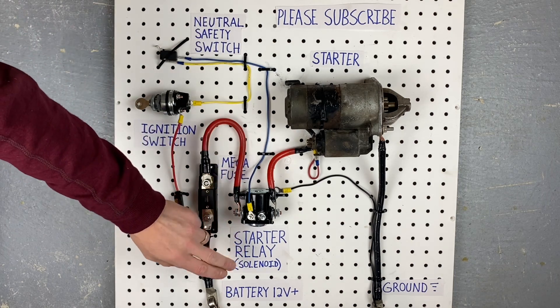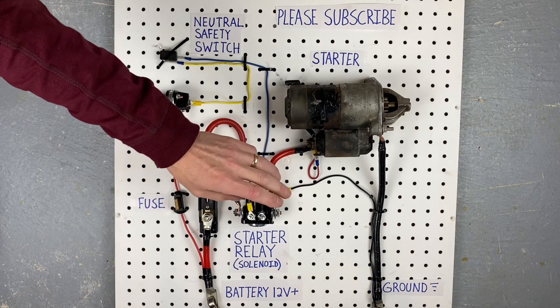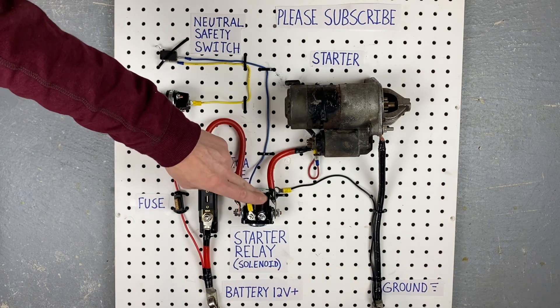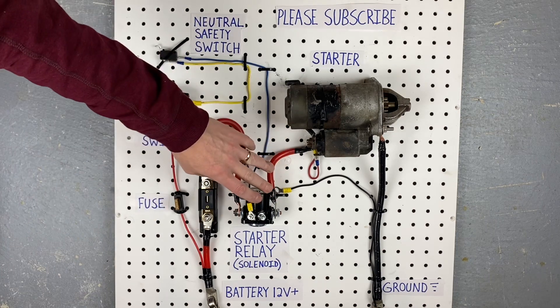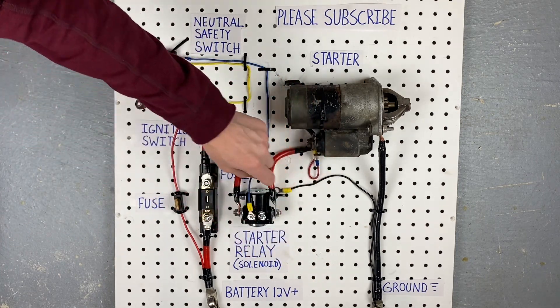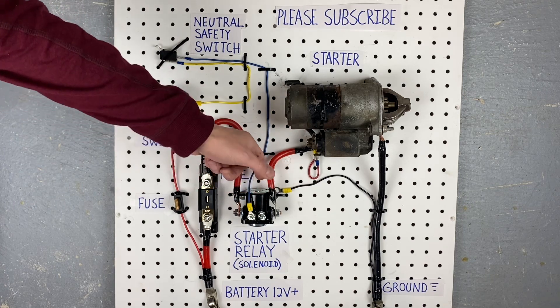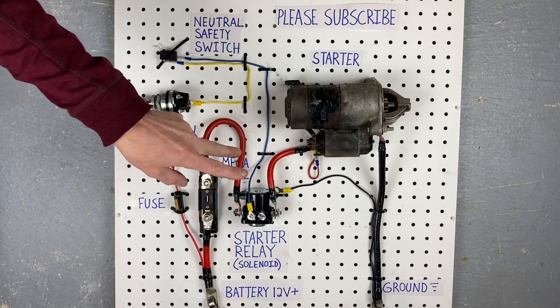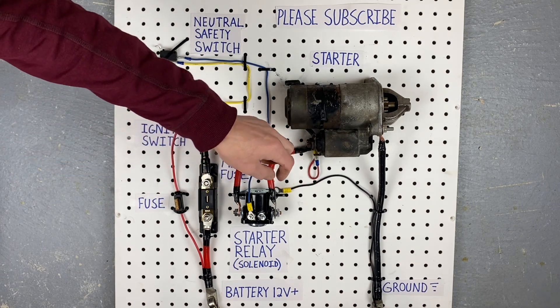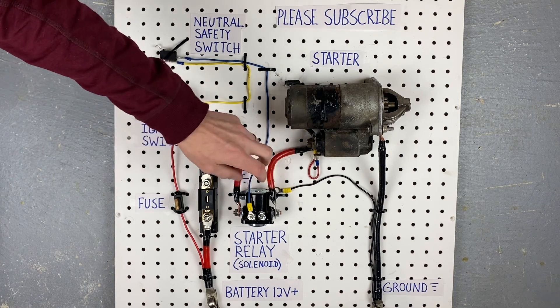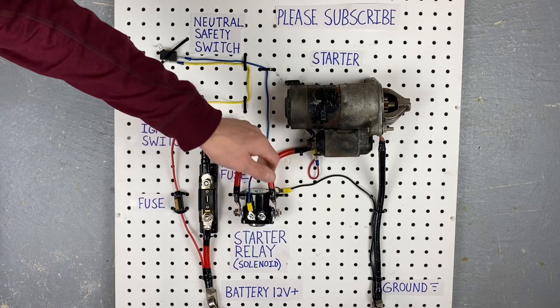A lot of people call these starter solenoids by the way. So if you're searching for one on the internet or you're at a parts store some people call them starter solenoids. Some people call them starter relays. I think technically it is a relay. So let's go over the wiring differences. I added a small ground wire to this relay because this relay grounds through the bracket that it mounts with. So normally it's bolted into an inner fender or something like that some part of the chassis and it grounds through this plate. But since I'm hooked up to a plastic board I obviously needed to add a ground wire to this metal plate.